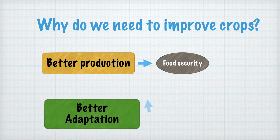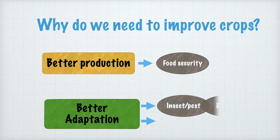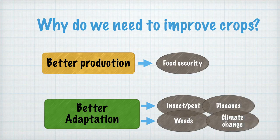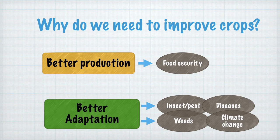Another reason is for better adaptation. Our current global agricultural system faces many challenges, such as insect pests, disease, weeds, and climate change. Insect pests, disease, and weed infestation are heavily increasing, and climate change is of global concern with global warming and greenhouse gas emissions. Our agricultural system should be able to go through these challenges.